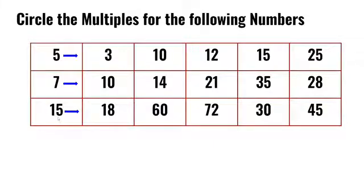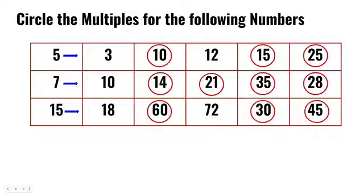Lastly, we have to circle the multiples of 15. 15 twos are 30, 15 threes are 45, 15 fours are 60. So 30, 45, and 60 are some of the multiples of 15. Check for answers.